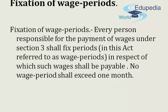The act has a provision for fixing wage periods. Every person responsible for the payment of wages under section 3 shall fix periods — referred to as wage periods — in respect of which such wages shall be payable. No wage period shall exceed one month. In short, section 3 of the Payment of Wages Act makes it mandatory to set the wage period as one month for wages to be paid to an employee.